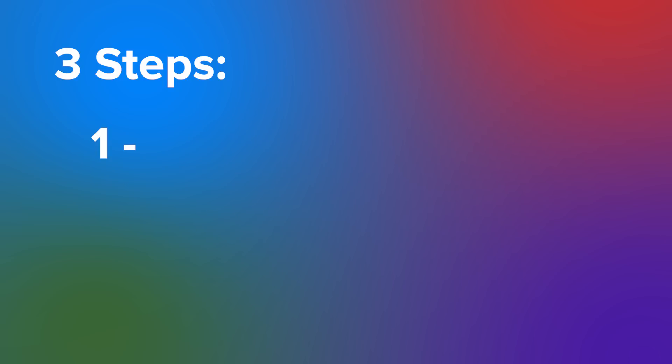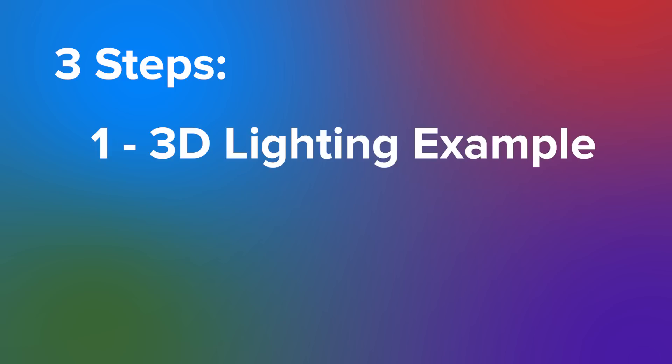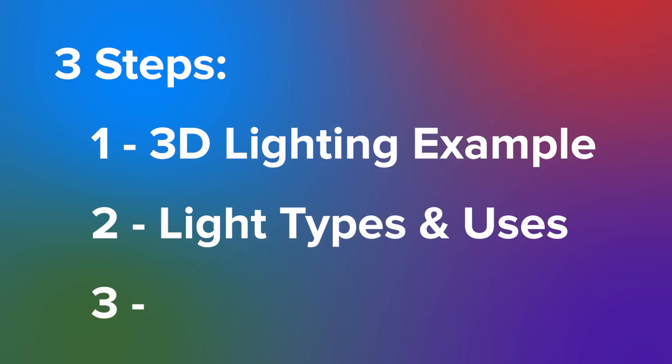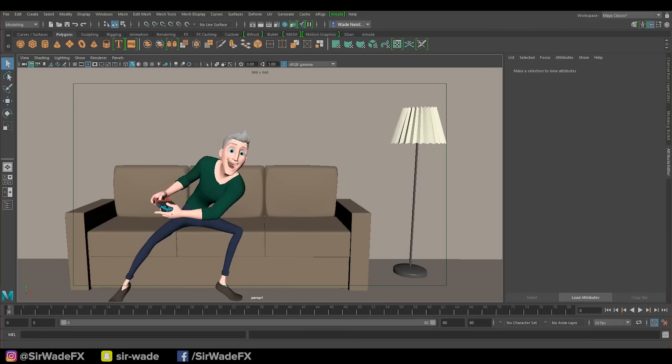We're going to do this video in three pieces. The first is just a quick demo of what it means to light in 3D for anyone who's interested or new to it. The second is a quick demo of the different light types you have in Maya — what they do and how they work. The third piece is the least amount of effort: tips for play blasting with better quality so you don't even have to worry about really lighting or rendering your scenes.